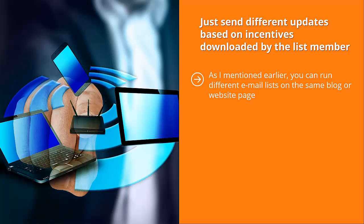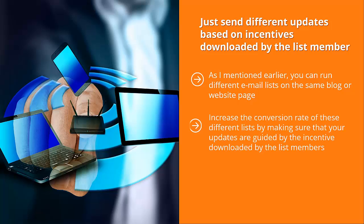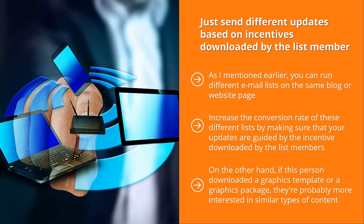Usually, these different lists offer different incentives. Increase the conversion rate of these different lists by making sure that your updates are guided by the incentive downloaded by the list members. For example, if the list member downloaded a video, chances are quite good that this person probably would want to watch other videos. On the other hand, if this person downloaded a graphics template or a graphics package, they're probably more interested in similar types of content.